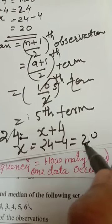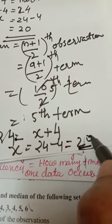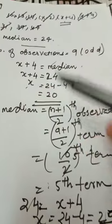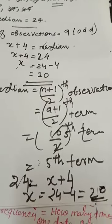That is 20. Easy method cutting also you can do, otherwise formula method also you can do.